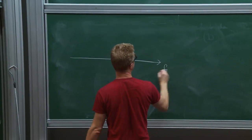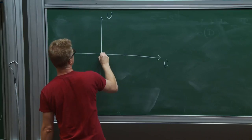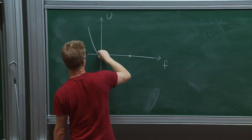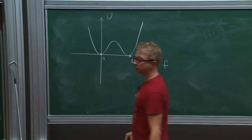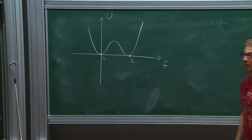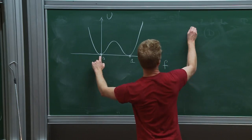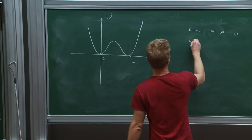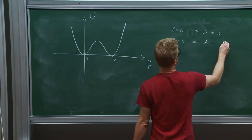The f-coordinate moves in a double-well potential. It has two minima: one at f=0 where the connection A is trivial, and another at f=1 where A is flat.